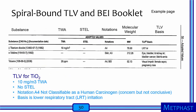Here I show a page from the spiral-bound TLV and BEI booklet. For titanium dioxide, the TWA threshold limit value is 10 mg per meter cubed, and there is no short-term exposure limit. The notation A4 means not classifiable as a human carcinogen — interpreted as there is a concern, but epidemiological and toxicological data are not conclusive. The last column shows the basis for this TLV is lower respiratory tract irritation.